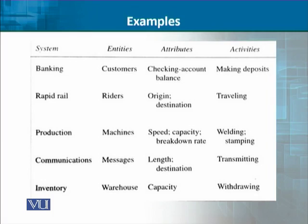Then we talk about a production system. If there is a production system, the entities are machines. The attributes will be speed — how long it runs and how fast it is. The activities will be things like welding, stamping, or whatever activity is performed by the machine.